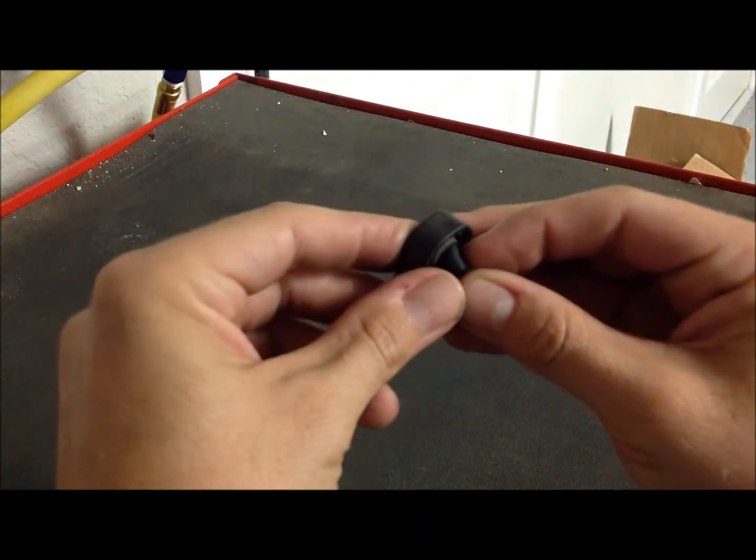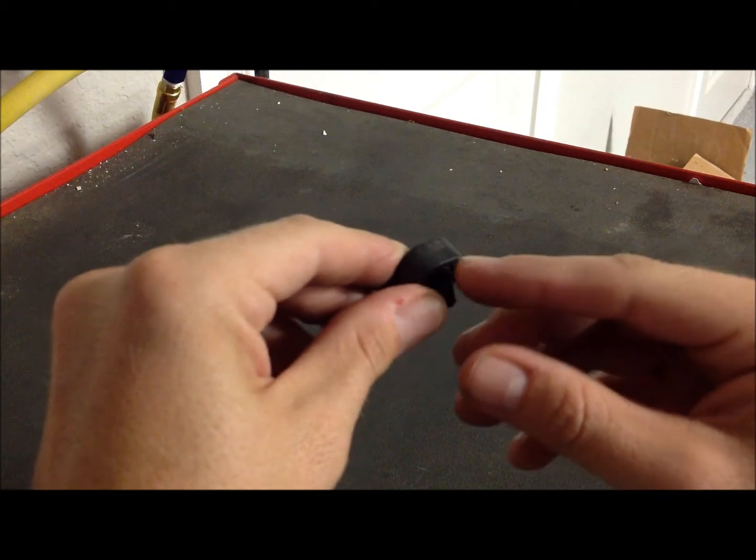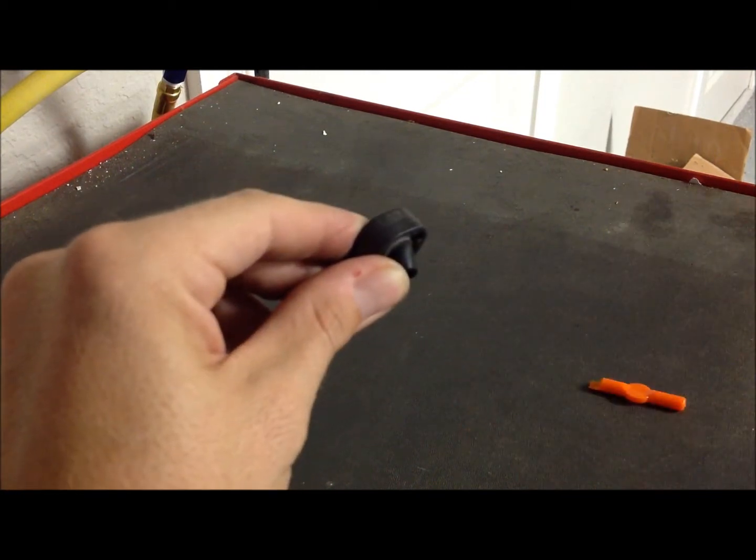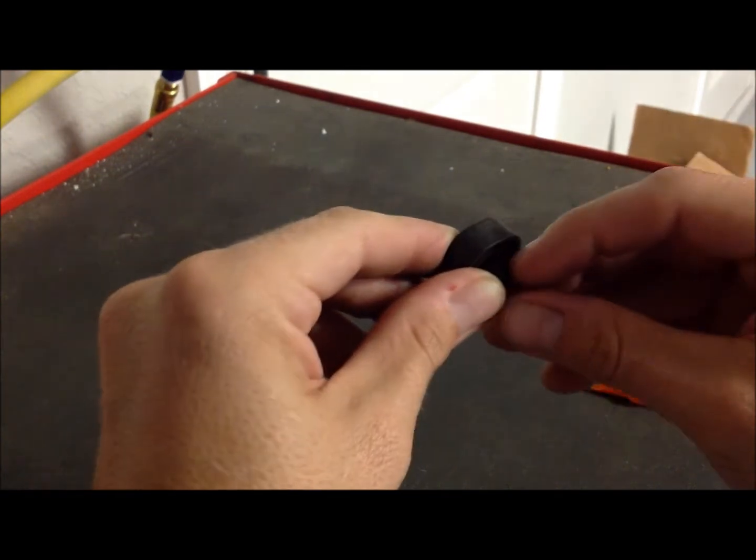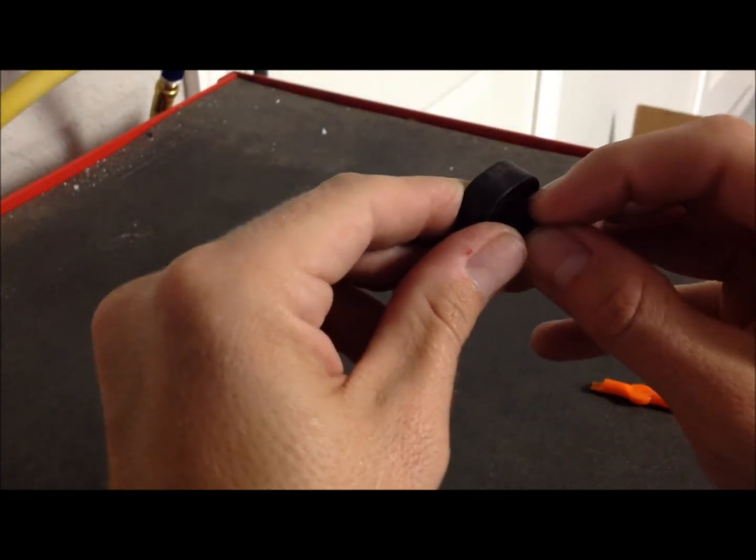Once you get the bushing lined up with the hole, set it up at an angle and tuck the edges of the bushing into the hole.